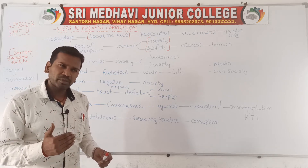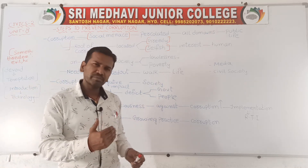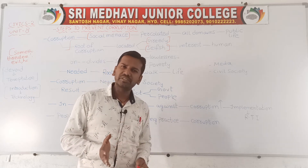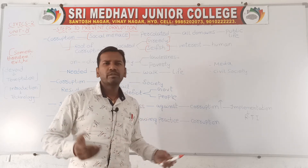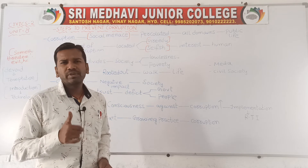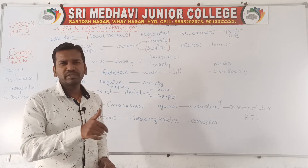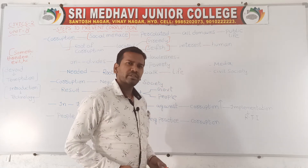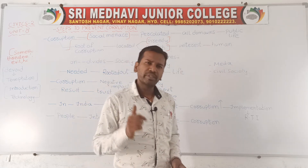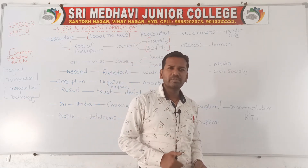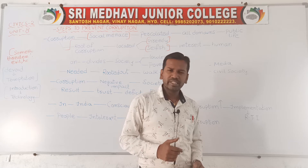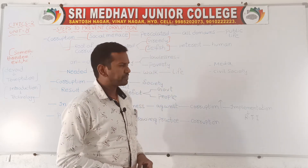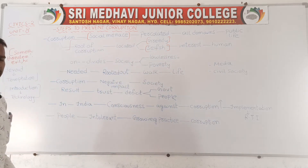The main problem of corruption is human — there are some people and officers who take bribes. When these officers are replaced by machines there will be no corruption at all. The only way is replacing humans with technology. Whenever human beings are replaced with technology, the work will be done very fast and corruption will be under control.